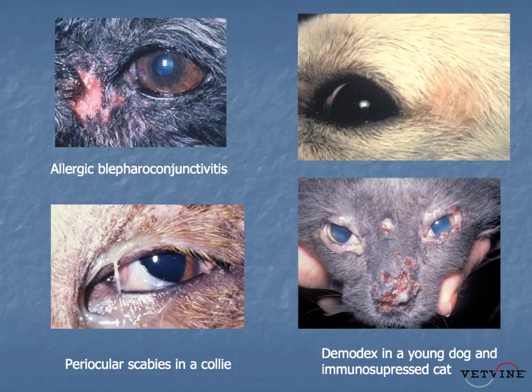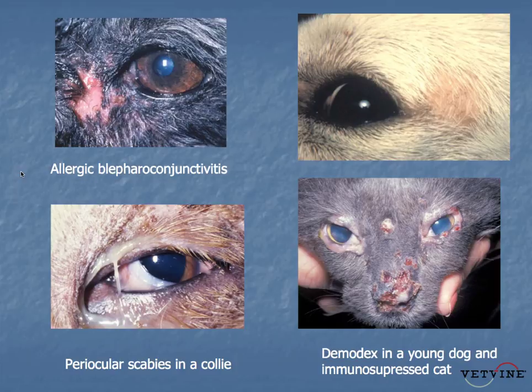The patient in the upper left is a little poodle, presented with chronic conjunctivitis and associated with it an ulcerative lesion at the medial canthus. He had responded really unpredictably to topical medications. We sent him off for skin testing, and indeed he was an atopic dog. Treatment of the atopy improved the ocular signs.